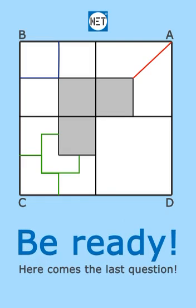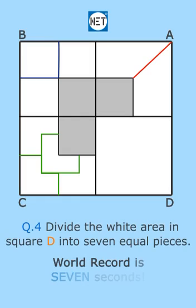Be ready, here comes the last question. Question number four: divide the white area in square D into seven equal pieces. World record is seven seconds. Any ideas?